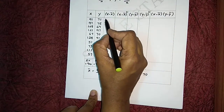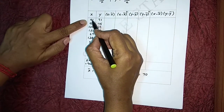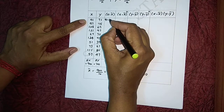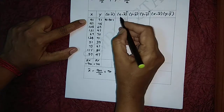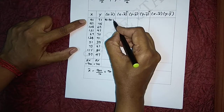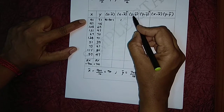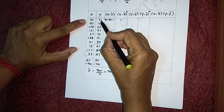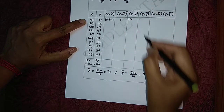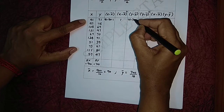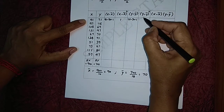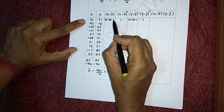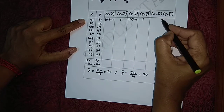For the first value: x = 91, so 91 − x̄ (90) = 1. Then (x − x̄)² = 1² = 1. Similarly, y − ȳ: 71 − 70 = 1, and (y − ȳ)² = 1² = 1. Now (x − x̄)(y − ȳ) = 1 × 1 = 1.